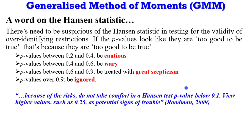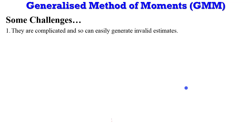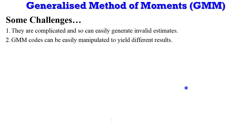A word on the Hansen statistic: be suspicious if p-values look too good to be true — because they probably are. If p-values are between 0.2 and 0.4, be cautious. If between 0.4 and 0.6, treat results with skepticism. If between 0.6 and 0.9, simply ignore the results. If over 0.9, the results are unusable. What is the ideal p-value? I'll leave that to the reader, though empirical papers published in high-impact journals typically report p-values between 0.4 and 0.6.